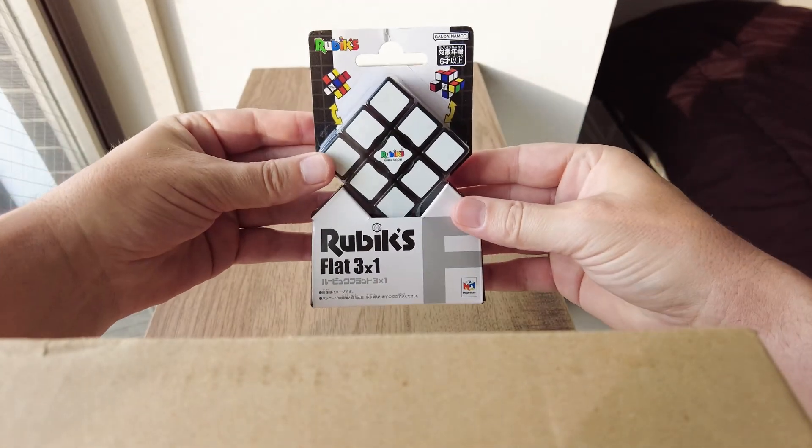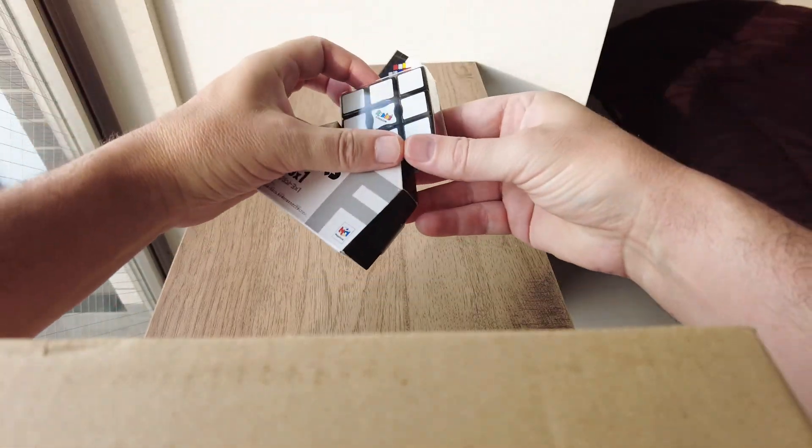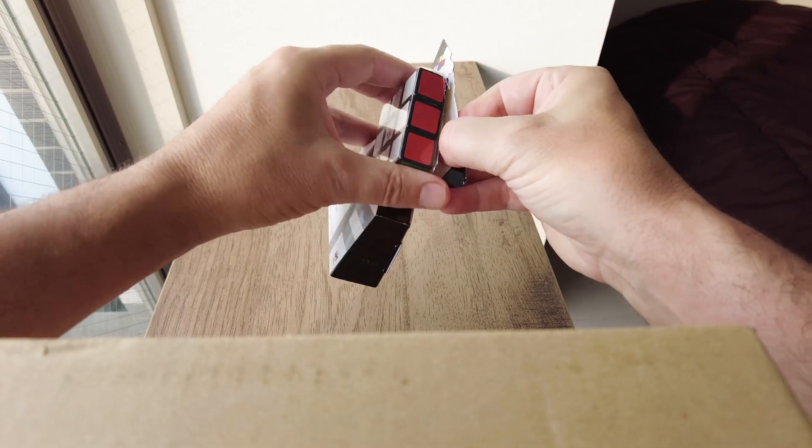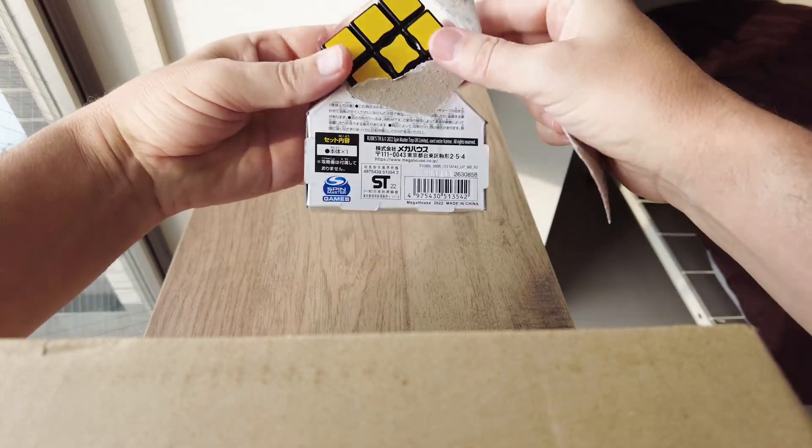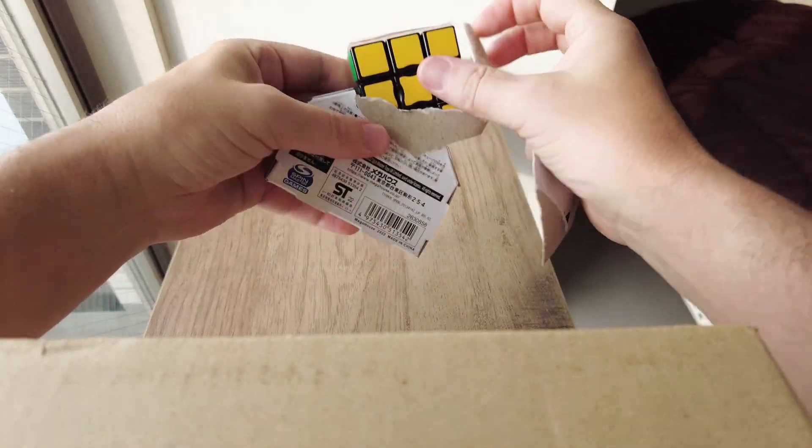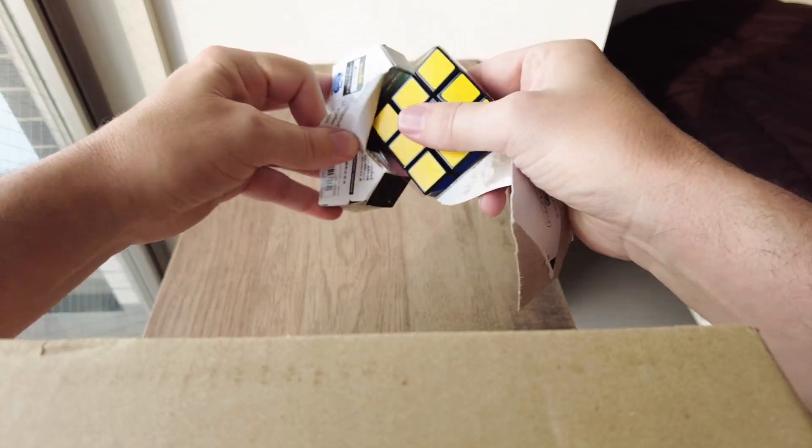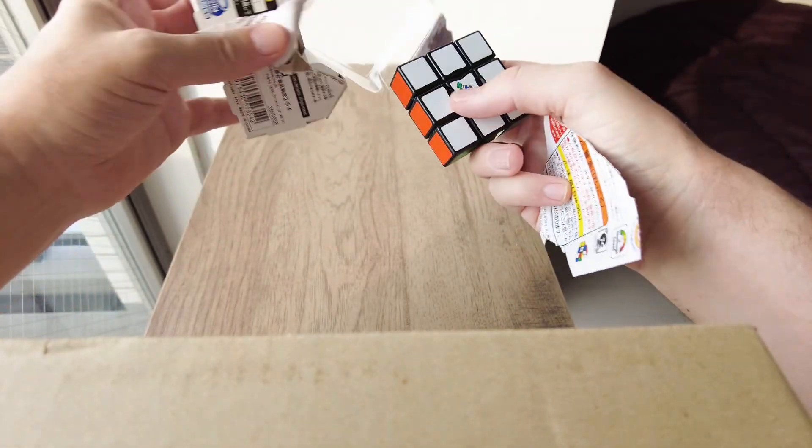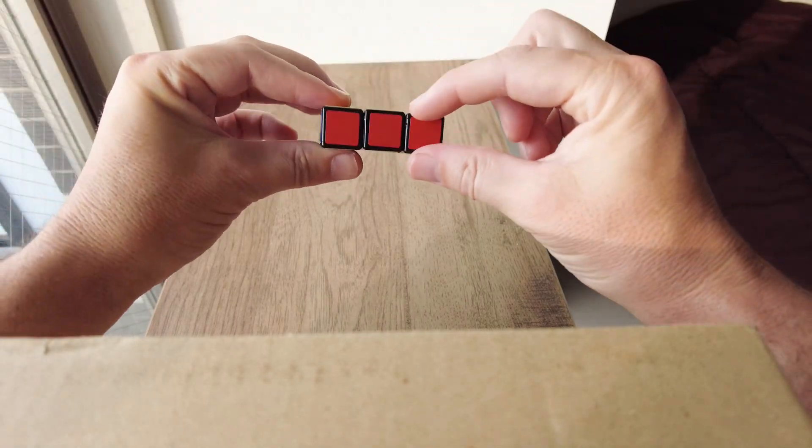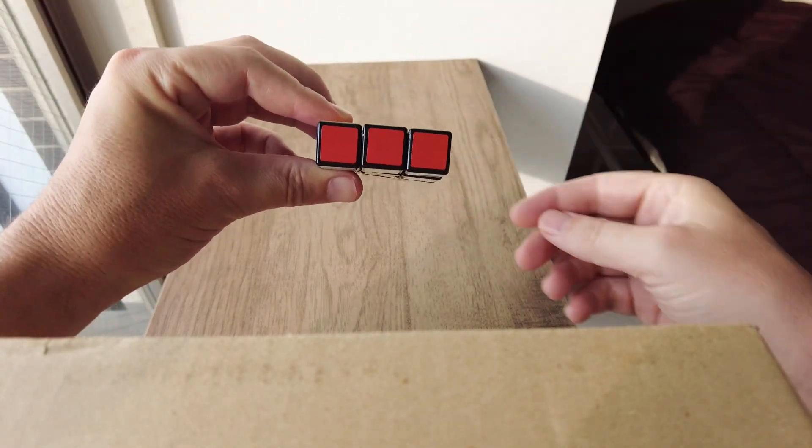So, let's open it up first of all. Okay, and it comes out of the pack. And it's exactly a third of a normal Rubik's Cube. It's just a third, one layer of the three layers.